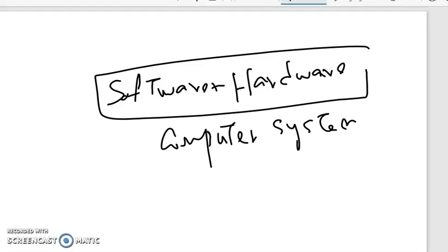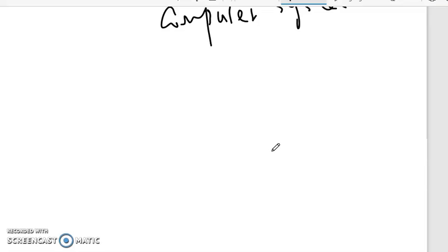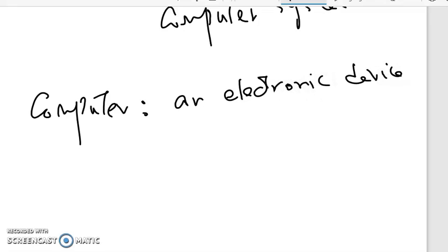A computer is an electronic device that performs computation tasks. The basic definition is that a computer is an electronic device, and the job of the computer is to compute or calculate.